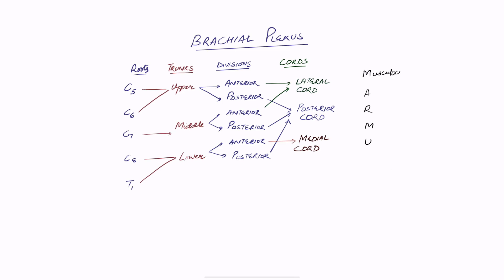The last thing is the branches. The easy way to remember is the mnemonic MARMU — M-A-R-M-U. These are the major branches of the brachial plexus, the final nerves formed. So: M is for musculocutaneous, A is for axillary, R is for radial, M is for median, and U is for ulnar nerve. The musculocutaneous nerve is primarily from the lateral cord, and the lateral cord gives out the musculocutaneous branch.